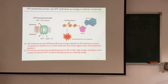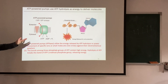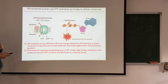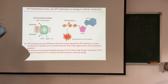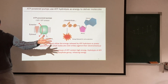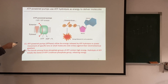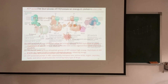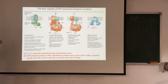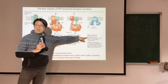Next we discuss ATP-powered pumps, which use ATP hydrolysis as energy. ATP is a major intracellular energy source because of its chemical structure: adenine, ribose, and three phosphate groups. The chemical bonds among these phosphate groups contain high energy, and breaking them releases a lot of energy locally. Proteins that hydrolyze ATP to ADP and inorganic phosphate use this energy to do work. There are four types of ATP-powered transport proteins: P-class pumps, V-class proton pumps, F-class proton pumps, and the ABC superfamily.